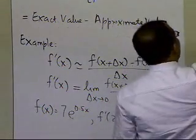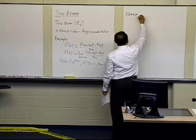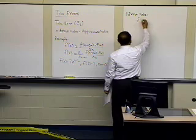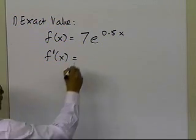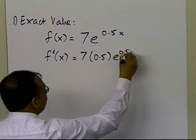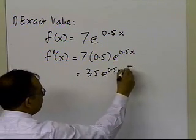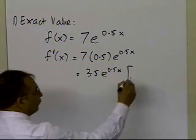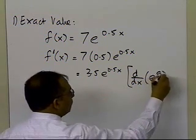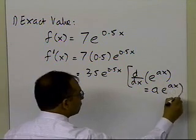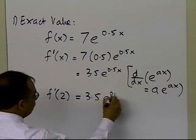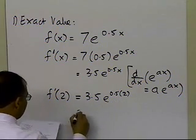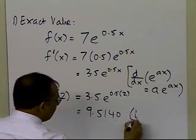We need two things: the exact value and the approximate value. Let's calculate the exact value first. Given f(x) = 7e^(0.5x), from differential calculus f'(x) = 7 × 0.5 × e^(0.5x) = 3.5e^(0.5x), using the rule that d/dx of e^(ax) = a·e^(ax). Therefore, f'(2) = 3.5e^(0.5×2), which equals 9.5140. That is the exact value.